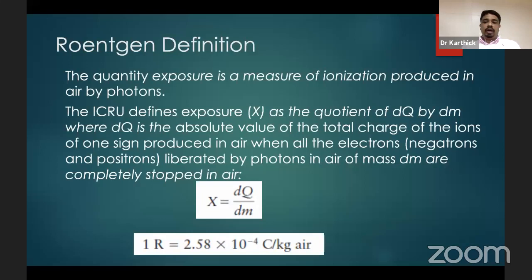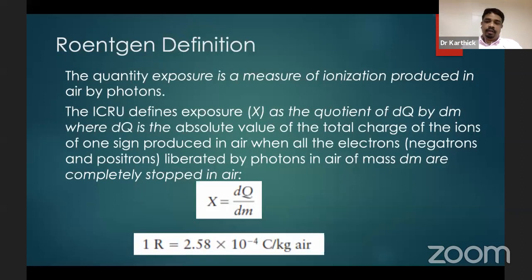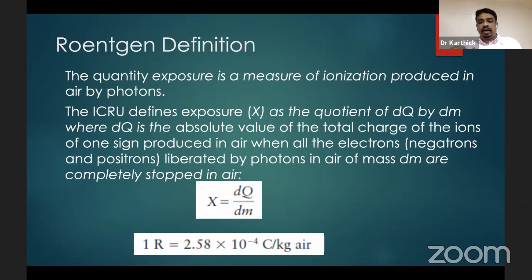The basic definition: the quantity of exposure is the ionization produced in air by photons. As per ICRU, exposure is defined as the quotient DQ/Dm, where DQ is the absolute value of the total charge of ions of one sign produced in air. Everything must be collected — we cannot leave any ion produced in the particular mass. We have to collect all the ions. One Roentgen equals 2.58 × 10⁻⁴ Coulomb per kilogram in air.